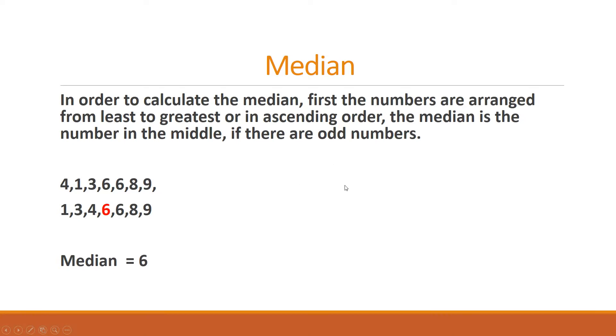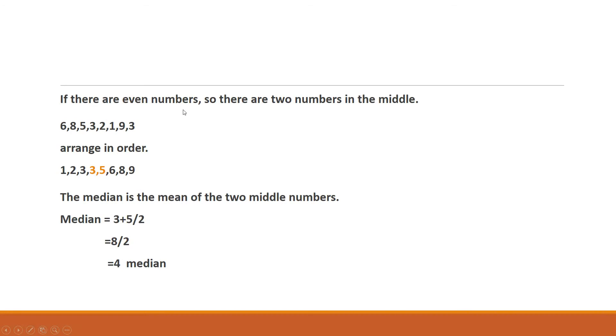But if there are even numbers, if there are even numbers then there are 2 numbers in the middle. See now 1, 2, 3, 4, 5, 6, 7, 8. Now in this group we have 8 numbers.